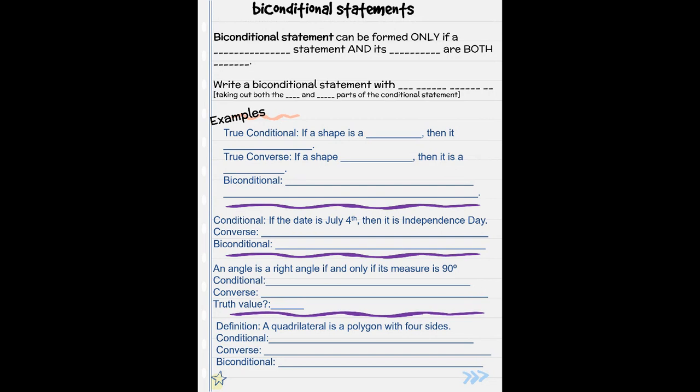These biconditional statements make our definitions in math. A biconditional statement can be formed if and only if a conditional statement and its converse are both true.